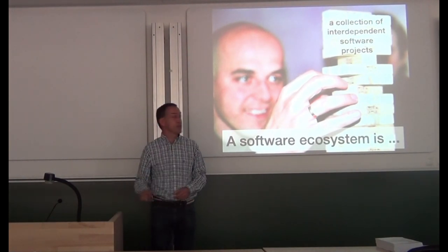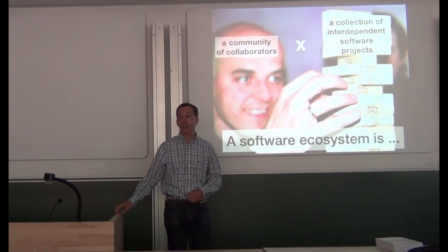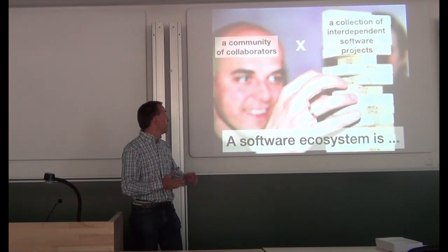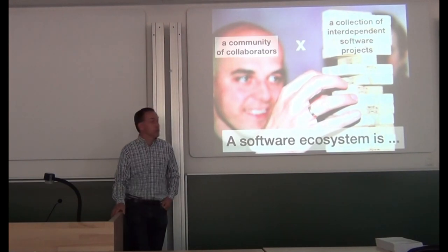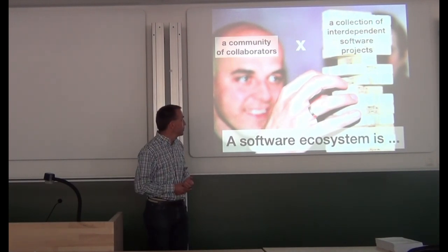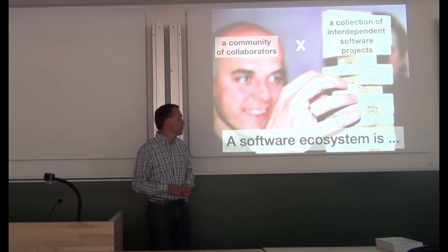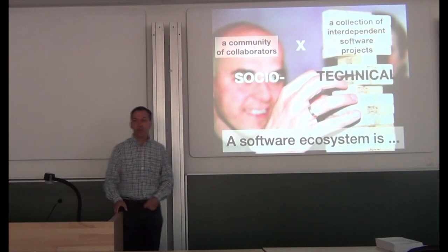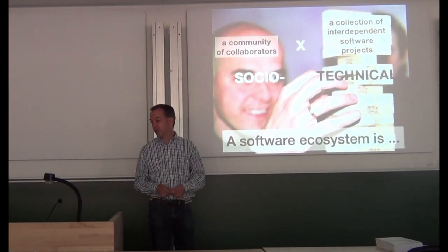This could be a distribution or a packaging ecosystem — it can take many different forms. On the other hand, there is a community of collaborators, typically the developers of all these software components, but it can be much more than just developers. Everyone who is involved in these projects somehow is a collaborator in the ecosystem. So in a software ecosystem there are two major characteristics: the large size — a collection of many different projects — and the social and technical aspects that are both equally important when you want to understand, evolve, and maintain the ecosystem over time.